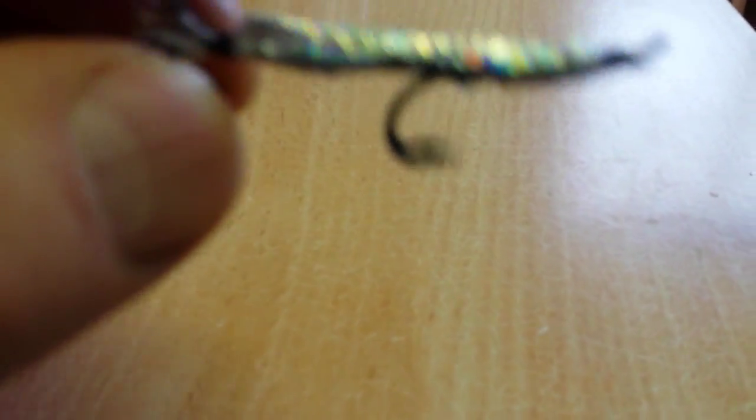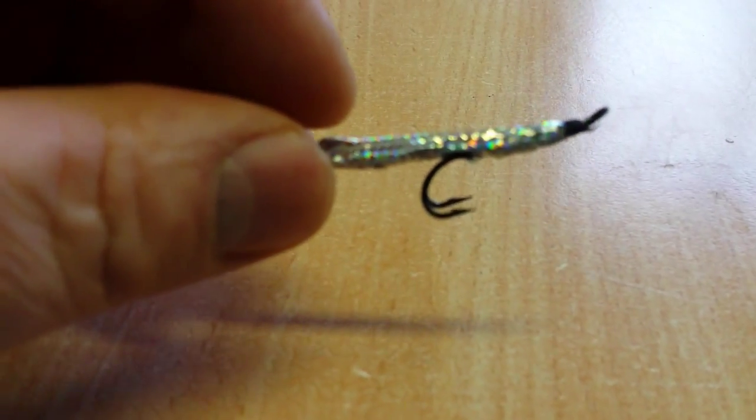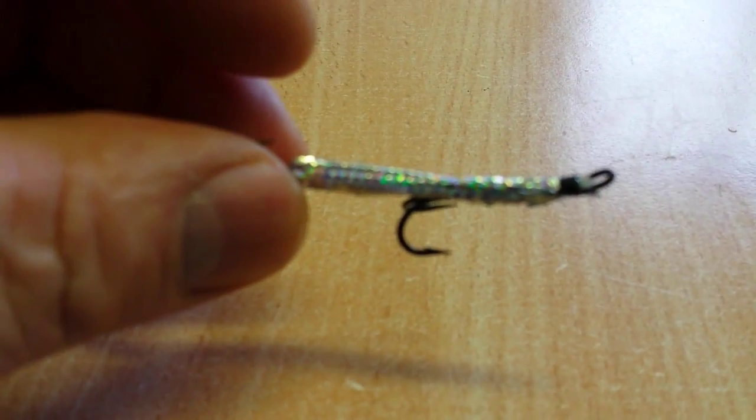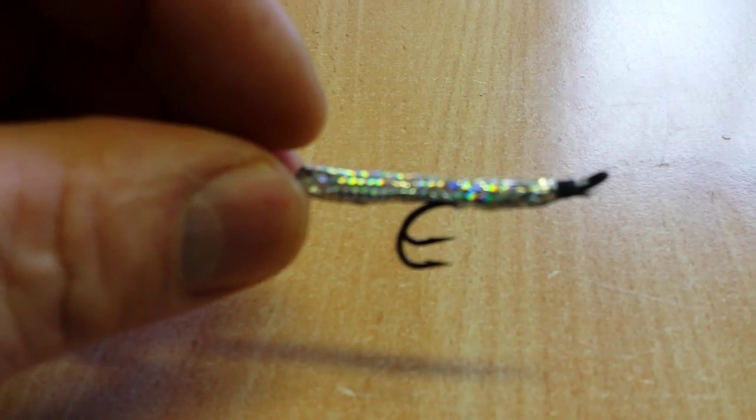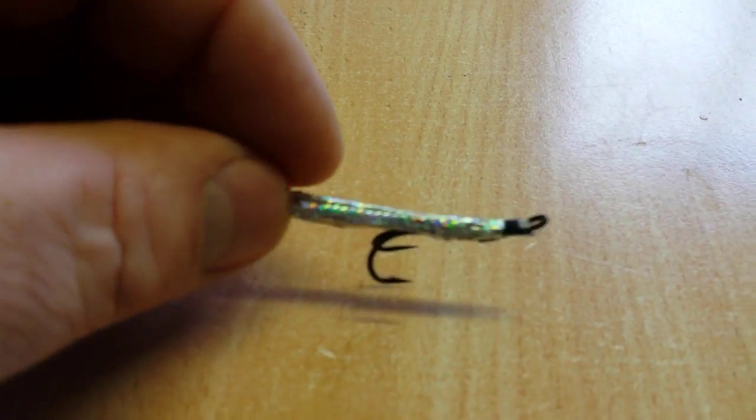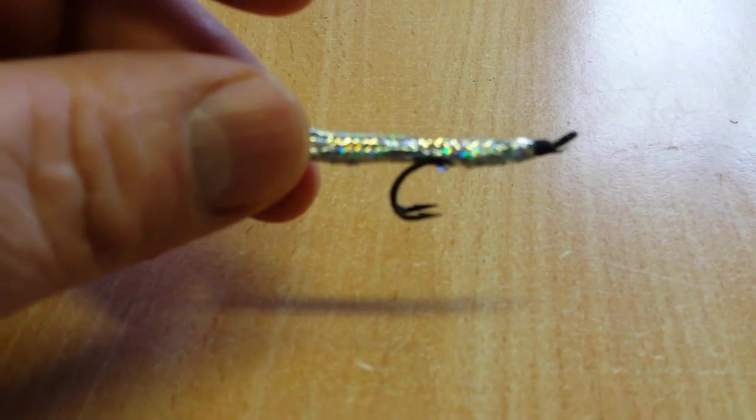This fly is only good at night in the dark. It's no good during the day. You get the odd fish during the day, but it's no good. Only in the dark, late at night. From dusk until dawn. You get a lot of salmon on it, loads of sea trout on it.